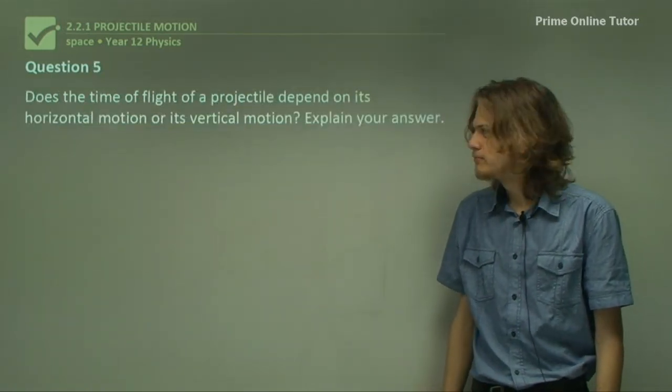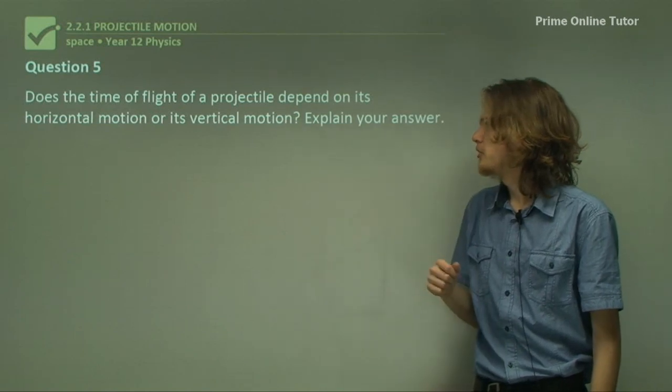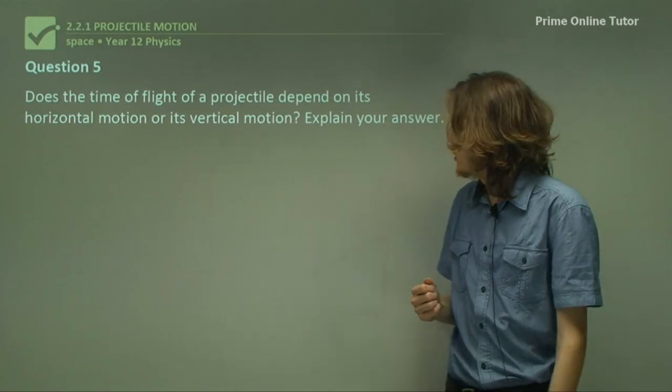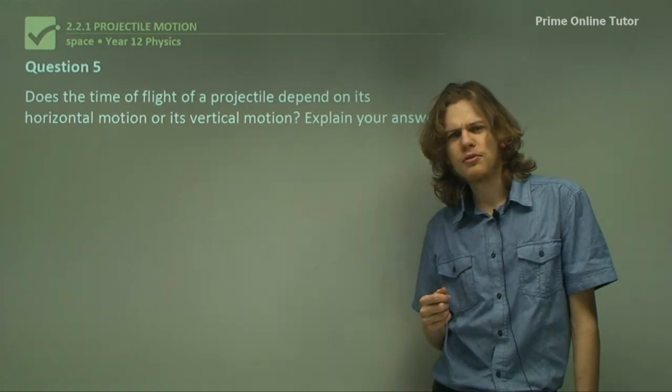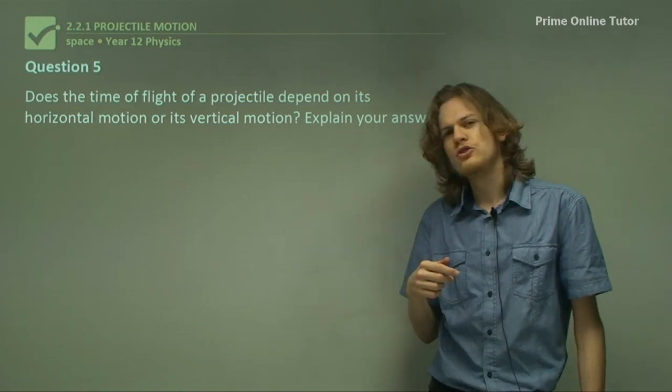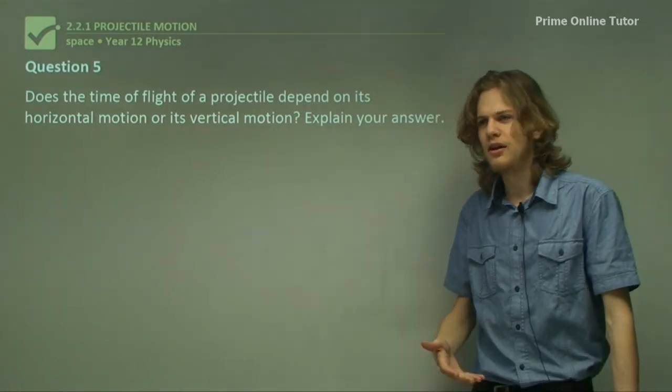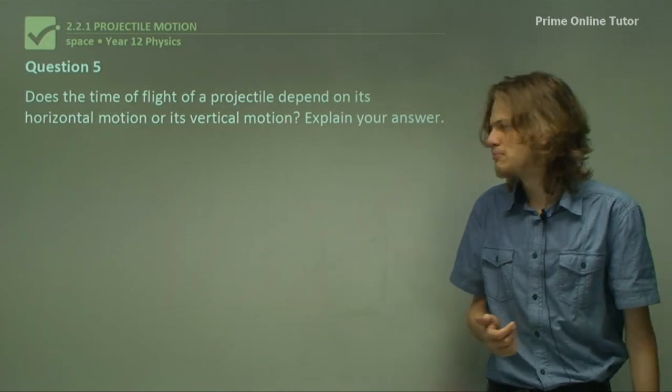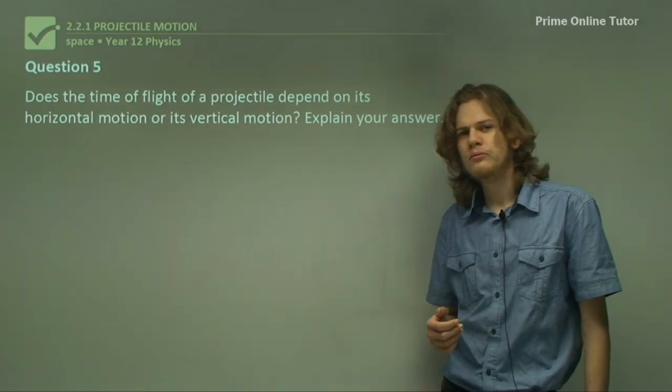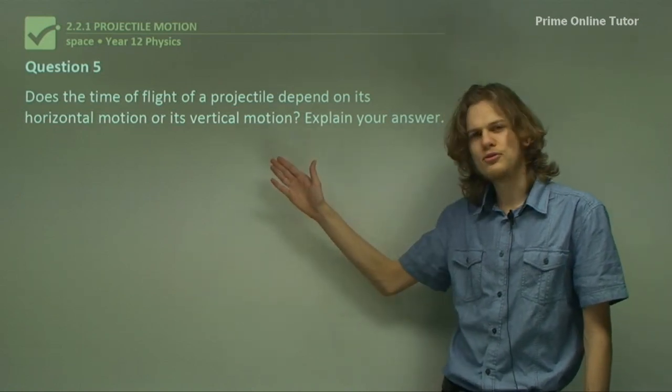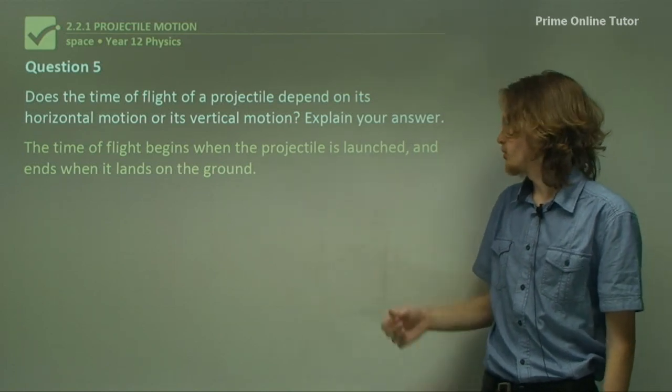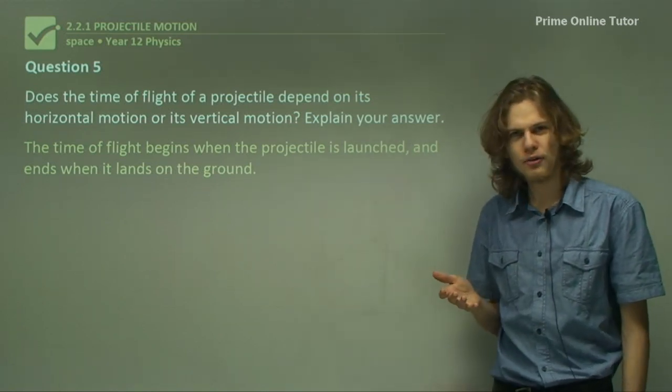Question 5. Does the time of flight of a projectile depend on its horizontal motion or its vertical motion? Explain your answer. Assuming that we're not throwing something off a cliff or up to a ledge, we can assume that the ground is going to be in the same position everywhere in the situation. So we don't need to worry about horizontal motion at all.